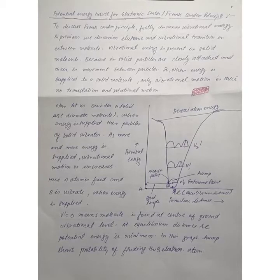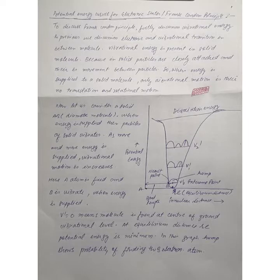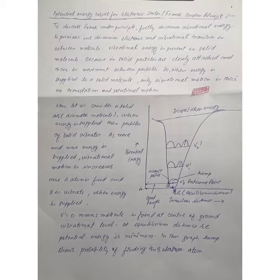Dear student, good morning. Today we discuss another topic of our chapter, Electronic Spectroscopy. Today's topic under discussion is what is the potential energy curve for electronic state, also known as qualitative description of potential energy curve for bonding and anti-bonding molecular orbital. On behalf of this topic, we further discuss the Frank-Condon Principle.